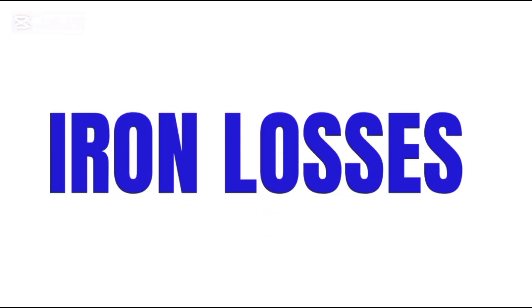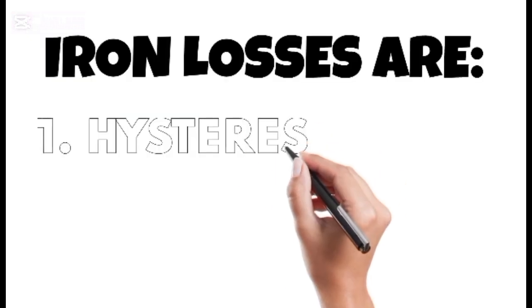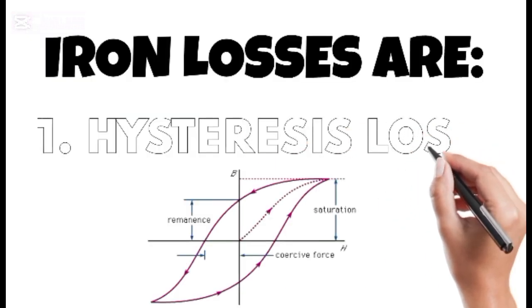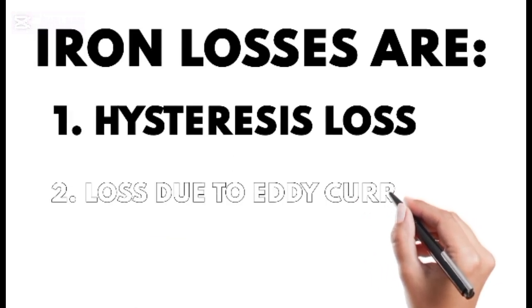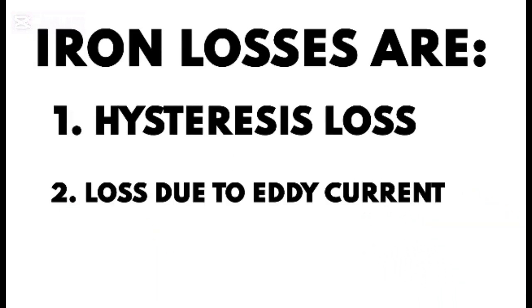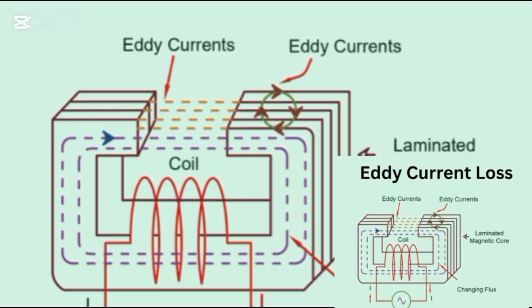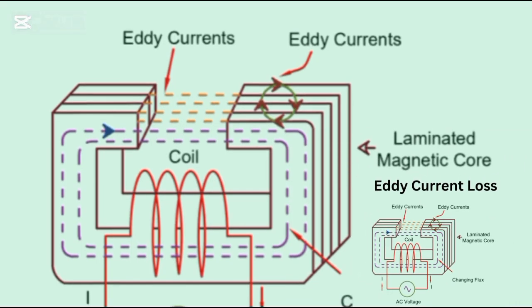Iron losses in the core: hysteresis loss from the magnetic field changing directions, and eddy currents. These tiny circulating currents produce heat. It's fascinating how something so small can generate such warmth.